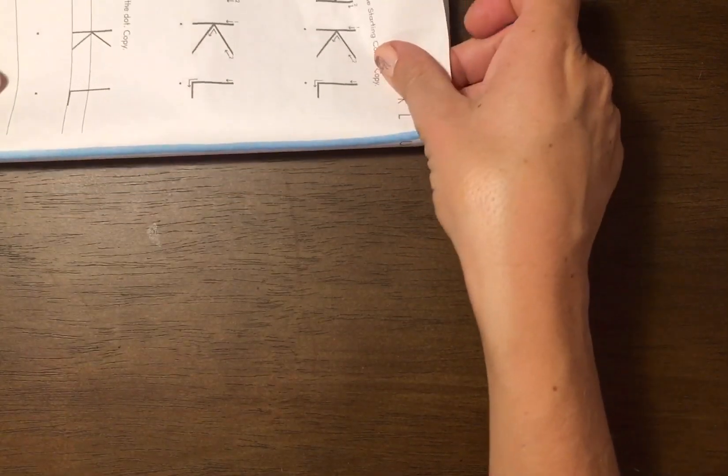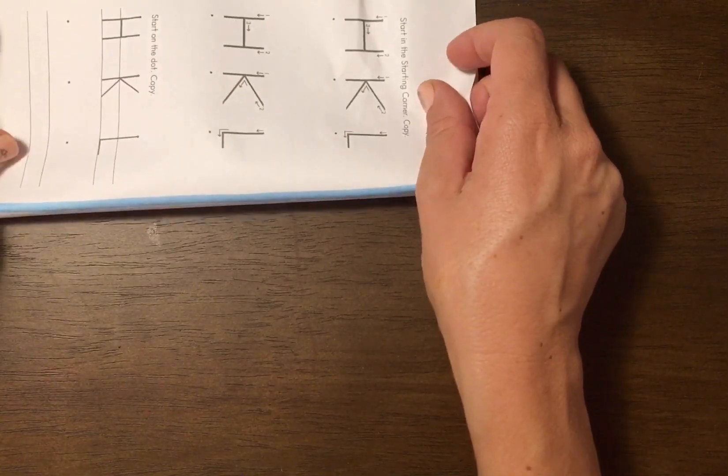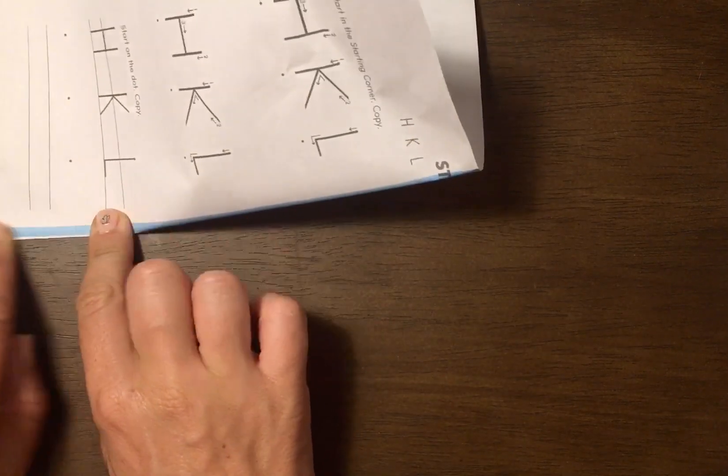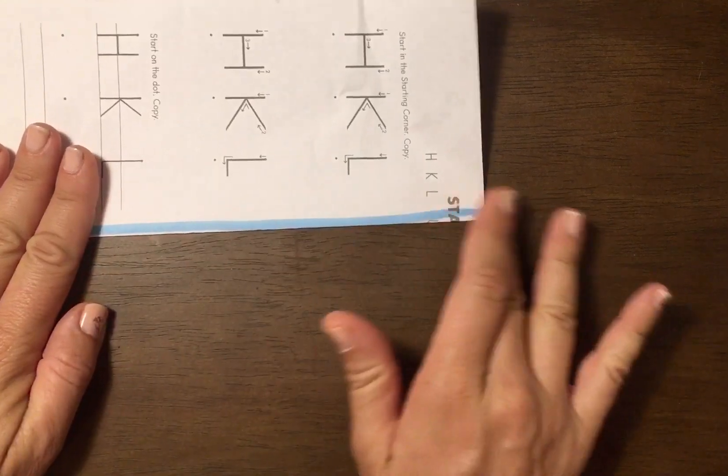I'm going to turn my paper over and push it up so that we can see the blue line. We're going to bend it back, and with one hand we hold and the other hand we push down and slide across.